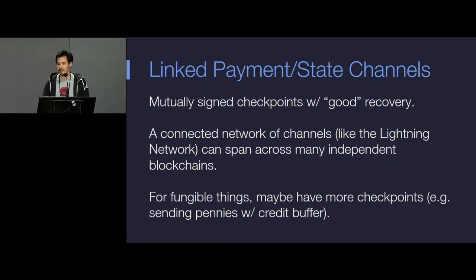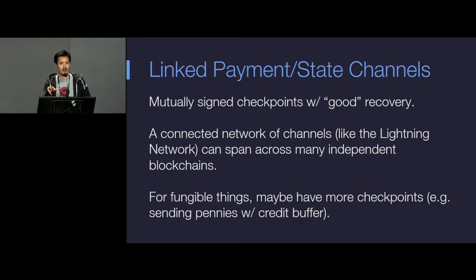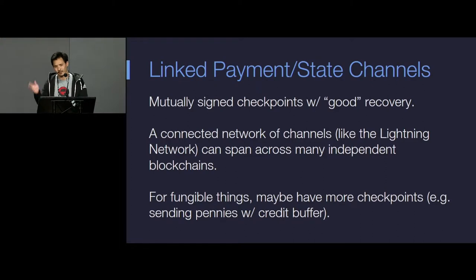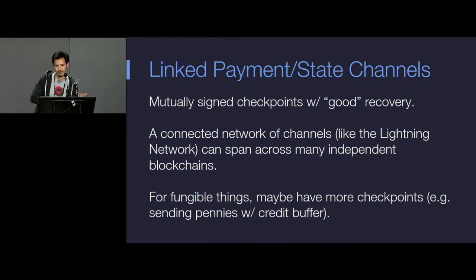If you think about payment channels as fundamentally being about signed checkpoints and recovery, then you can see there are other ways to improve the throughput of a Lightning Network. The problem with hash locks in a complex Lightning Network is that the interlinks might have too many concurrent transactions going through, making dispute resolution more expensive when something happens in that interlink and you have to settle by dumping all the ongoing transaction state. Instead, for fungible coin payments, you can send little pennies, see that it went to the other side, and keep sending — changing the solution into something requiring a credit buffer between payment channels.